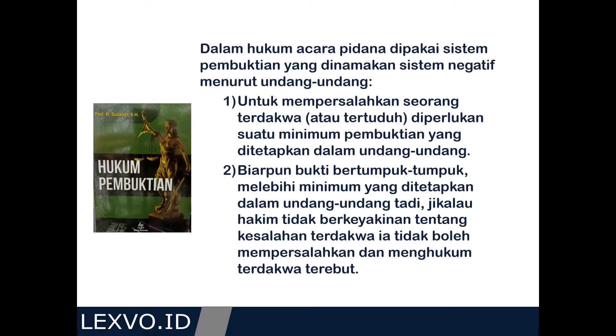Sistem pembuktian negatif menurut undang-undang tersebut dimuat dalam Pasal 183 Undang-Undang No. 8 Tahun 1981 tentang Kitab Undang-Undang Hukum Acara Pidana atau KUHAP. Pasal 183 KUHAP tersebut berbunyi: Hakim tidak boleh menjatuhkan pidana kepada seseorang kecuali apabila dengan sekurang-kurangnya dua alat bukti yang sah ia memperoleh keyakinan bahwa suatu tindak pidana benar-benar terjadi dan bahwa terdakwalah yang bersalah melakukannya. Menurut penjelasan Pasal 183 KUHAP, ketentuan ini adalah untuk menjamin tegaknya kebenaran, keadilan, dan kepastian hukum bagi seseorang.